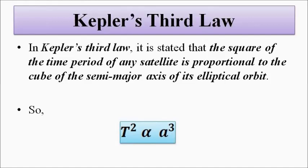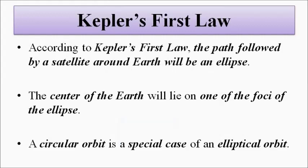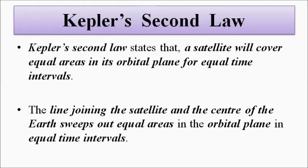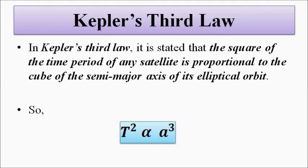This is Kepler's third law: the square of the orbital time period of any satellite is directly proportional to the cube of the semi-major axis. We have discussed all three laws of planetary motion proposed by Johannes Kepler — Kepler's first, second, and third law. I hope you liked this video. Please subscribe to my channel Engineering Tutorial for more videos related to engineering, science, and technology. Have a great day, thank you very much.